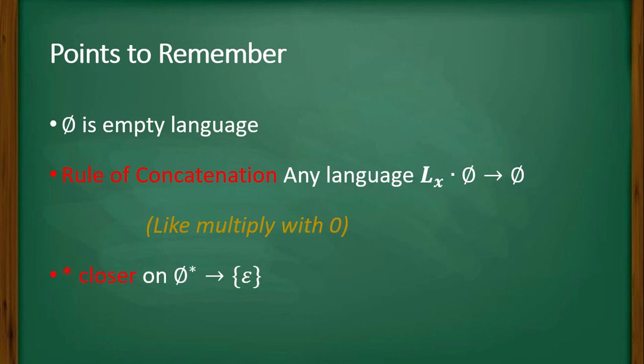Next is star closure on empty language. As you know, whatever language it is, if star is there on it, automatically the resulting language will have Epsilon in it. So that thing happens in case of empty language φ also. If it is star closure of φ, then the resulting language will contain only one symbol, that is Epsilon.